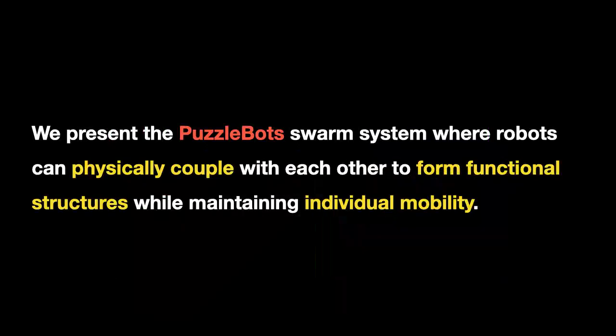In this paper, we present the PuzzleBots swarm system. Our goal for this robot is that they can physically couple with each other to form functional structures, for example, like bridges that can cross gaps while also maintaining the physical mobility so that they can move individually around the environment by themselves and perform tasks.